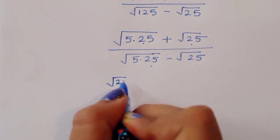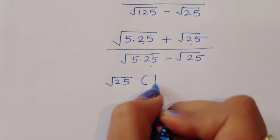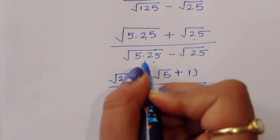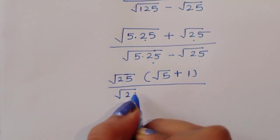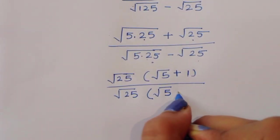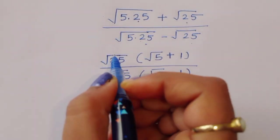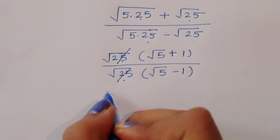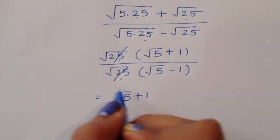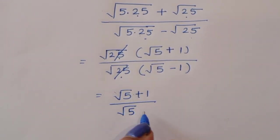We take square root of 25 as common. On the left we are left with square root of 5 plus 1 in the numerator, divided by square root of 25. We can cancel the square root of 25 common factor, and we are left with square root of 5 plus 1, divided by square root of 5 minus 1.